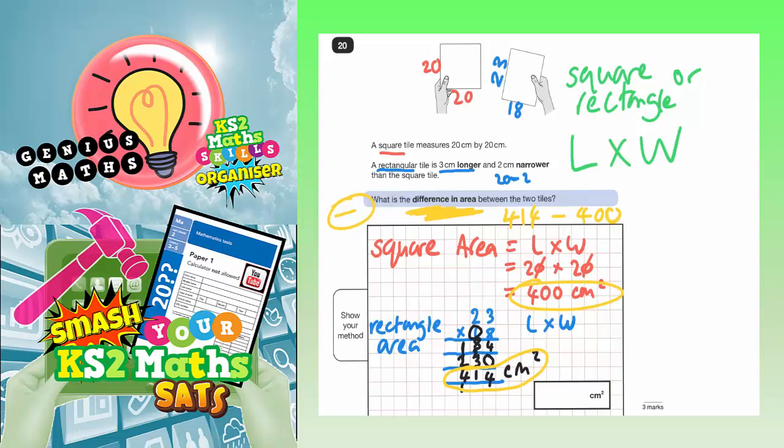414 take away 400, you can probably do in your head. You can clearly see that the gap is going to be 14 centimetres squared. But if you can't do it, you could actually do a column method. 414 take away 400. 4 take nothing is 4, 1 take nothing is 1, 4 take 4 is nothing. So that leaves you with 14 centimetres squared.